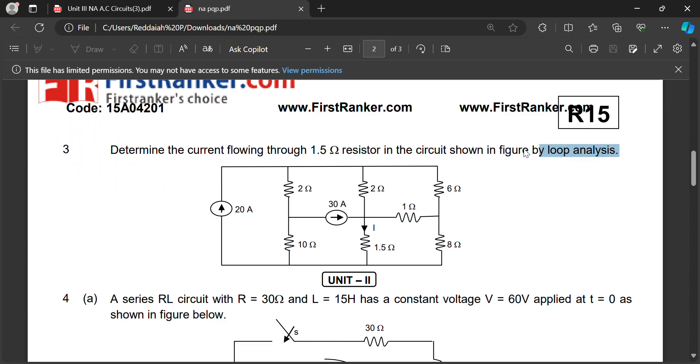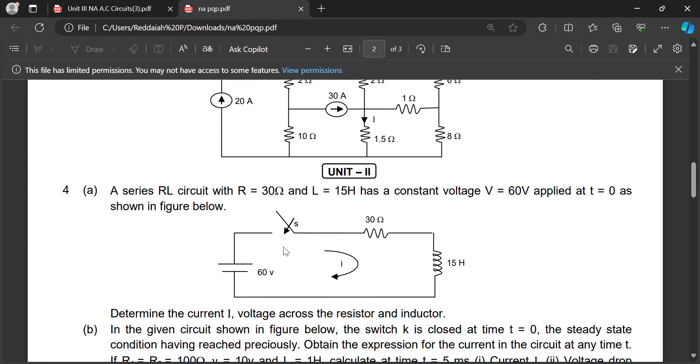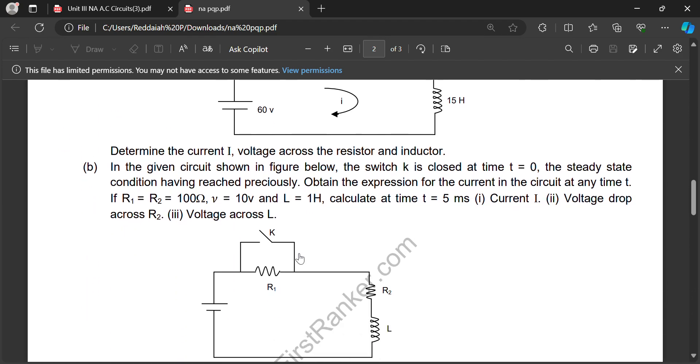Coming to Unit 2, transient circuit. A series RL circuit, R and L is given, V is 60 volts applied at t equal to zero. This type of problems we solved in Unit 2. Determine the current I and voltage across the resistor and inductor. The same detailed problem we solve in Unit 2.